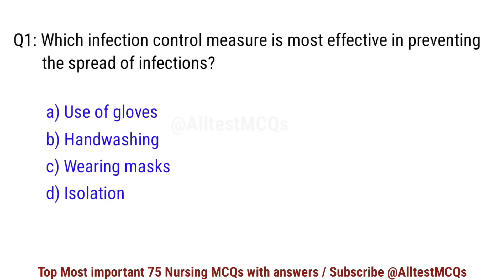Question number 1. Which infection control measure is most effective in preventing the spread of infections? Correct option is B: Handwashing.